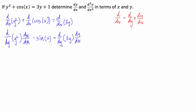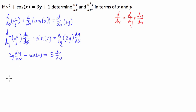Let's evaluate this. d/dy of y squared is 2y, so we have 2y times dy/dx minus sine of x, equal to d/dy of 3y which is just 3, times dy/dx. Now I'm going to group my dy/dx terms on the left hand side and move the sine of x to the right, leaving me with 2y dy/dx minus 3 times dy/dx equals sine of x.